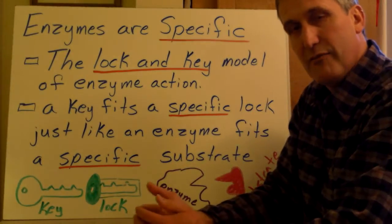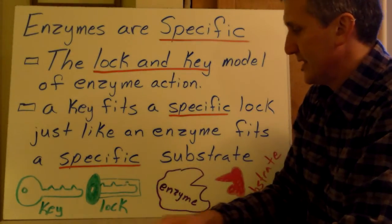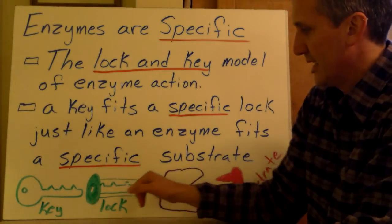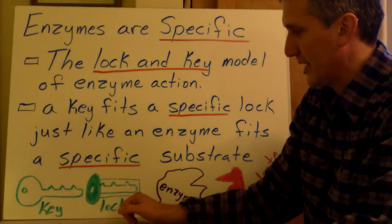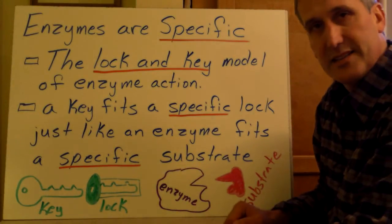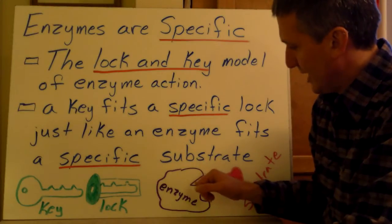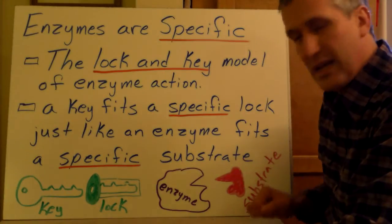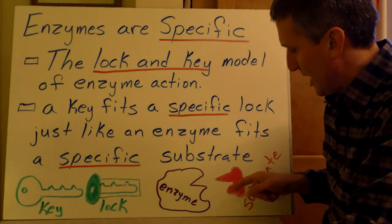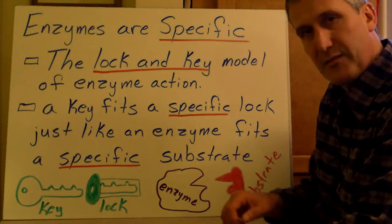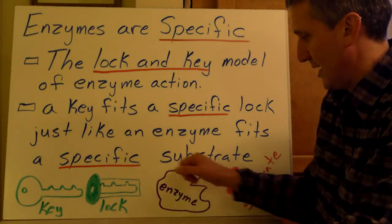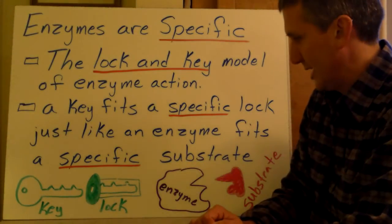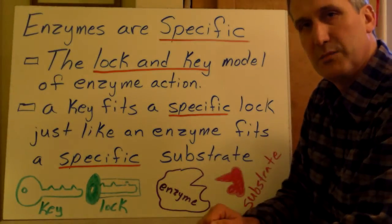So what does that mean? We have a key over here. Every key fits a specific lock, and you'll see how the shape of the key is specific to this lock. Just like we have the enzyme here, the shape of the active site of that enzyme is specific to a substrate. So you'll see how the shape of this substrate fits with this specific enzyme. So every enzyme only fits specific substrates just like every key is shaped to fit a specific lock.